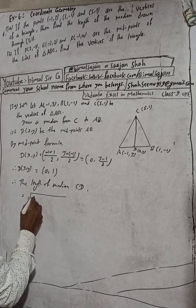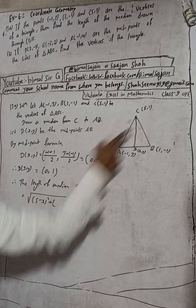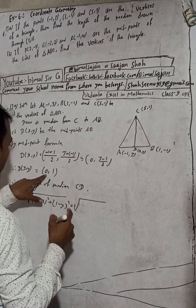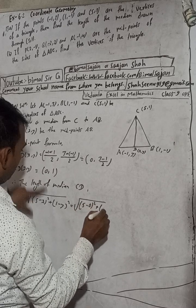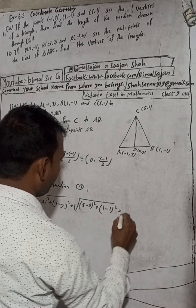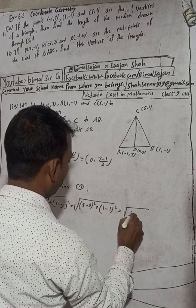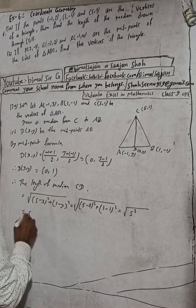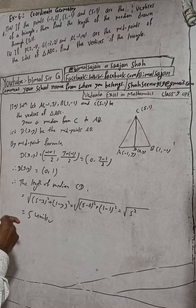So CD = √((5 - 0)² + (1 - 1)²) = √(5² + 0²) = √25 = 5. Therefore, the length of the median CD is equal to 5 units.